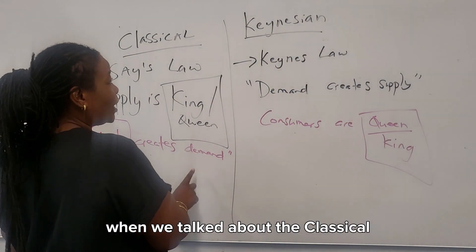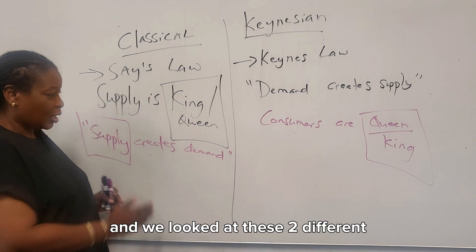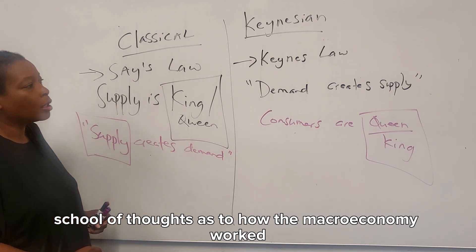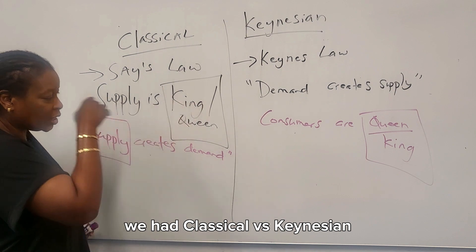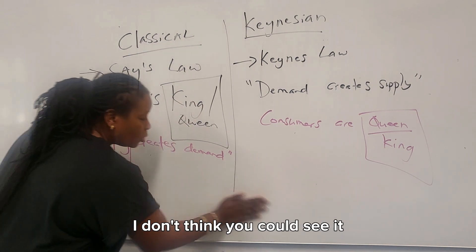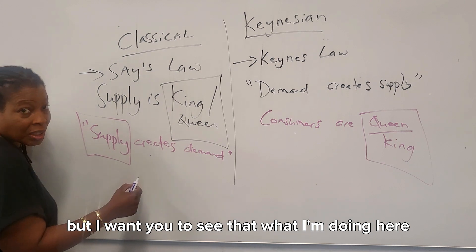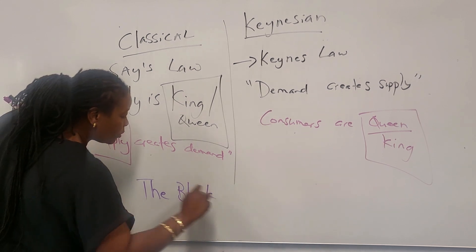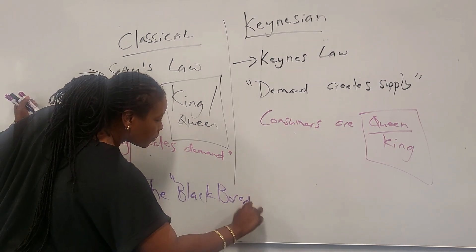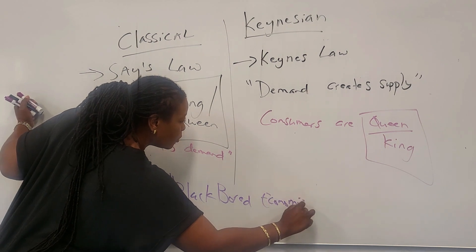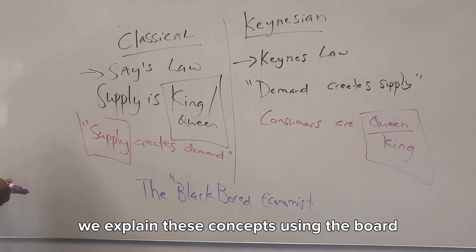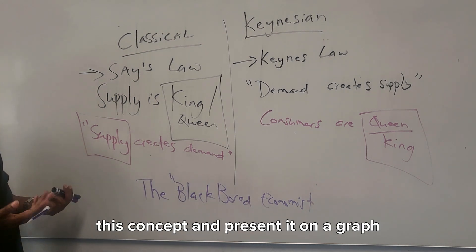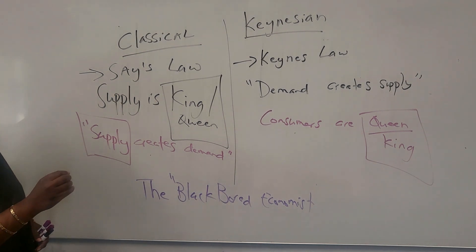Remember the last time we talked about classical versus Keynesian economics and looked at these two different schools of thought as to how the macroeconomy works. I want you to see what I'm doing here — I'm explaining concepts on the board. You wouldn't be in an econ class if we didn't take this concept and present it on a graph.